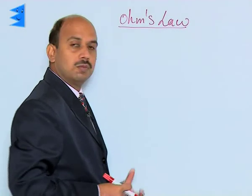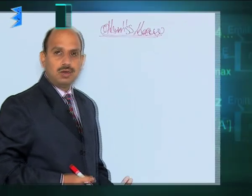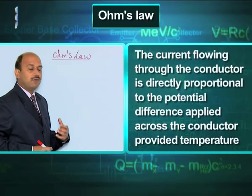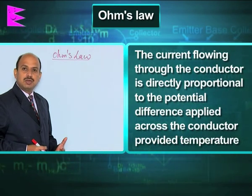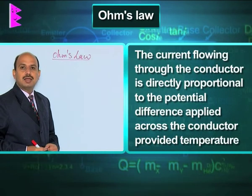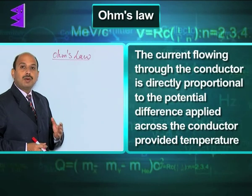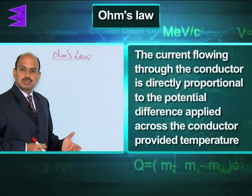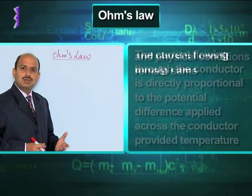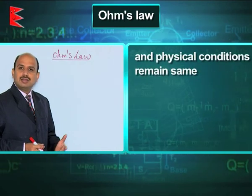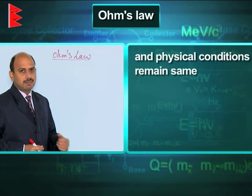Now, let us discuss Ohm's law. According to Ohm's law, the current flowing through a conductor is directly proportional to the potential difference applied across the ends of the conductor, provided temperature and physical dimensions — like length and area of cross-section — of the conductor remain the same.